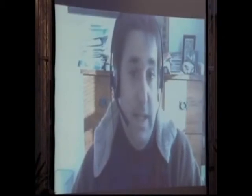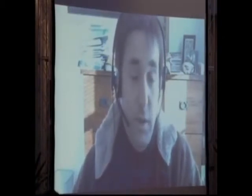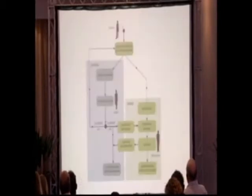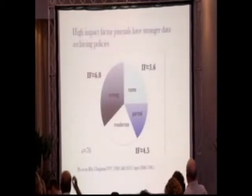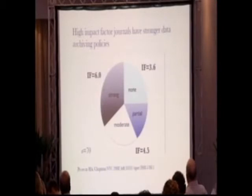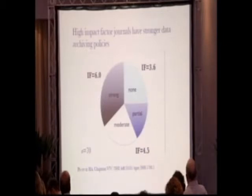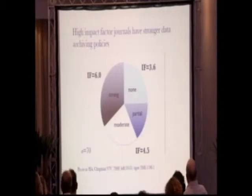It helped that JDAP was adopted simultaneously by many leading journals in one discipline. But many journals have independently strengthened their own data policies in recent years. A recent survey by Heather Piwowar and colleagues of about 70 biomedical journals found an actual relationship between the strength of the data policy and the impact factor of the journal — strength being measured by whether they require or just encourage archiving, or just sharing upon request, and whether this applies to all data types or only those fitting specialized databases. What this tells us is that data policy strength is one dimension on which journals compete to distinguish themselves in quality and prestige.